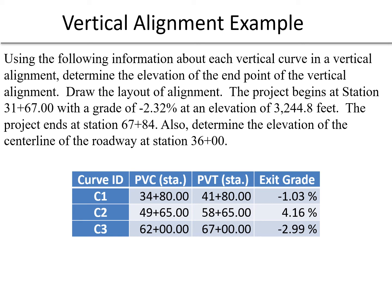In this example problem we're given a table with information about vertical curves and we're asked to determine the elevation of the endpoint of the vertical alignment. We're told that the project begins at station 31 plus 67 with a grade of negative 2.32 percent, a beginning elevation of 3244.8 feet, and the project ends at station 67 plus 84.